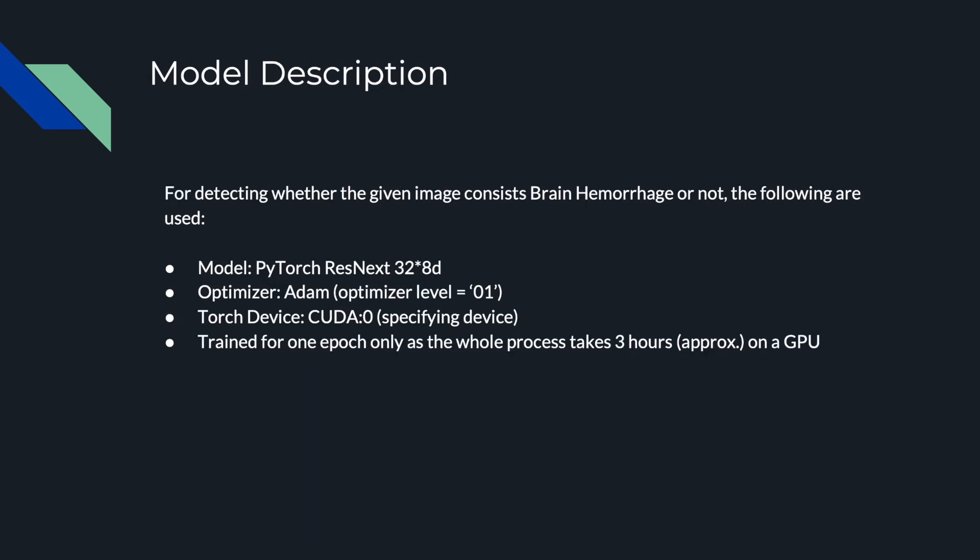For detecting whether a given image contains brain hemorrhage, the following are used: model — PyTorch ResNeXt 32×8d; optimizer — Adam; torch device — CUDA (default CUDA device). This model is trained for only one epoch, as the full training process takes approximately three hours even on a GPU.